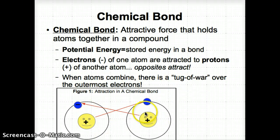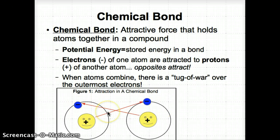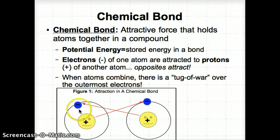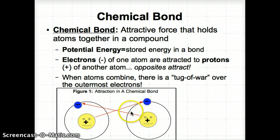This attraction is shown in Figure 1. When atoms combine, there's generally a tug of war over the outermost electrons — the electrons at the outer edge — which will become much more important later in this unit. We can think of this attraction as Romeo and Juliet being attracted to each other: the negatively charged electrons outside the nucleus of one atom are attracted to the positive protons inside the nucleus of another atom.